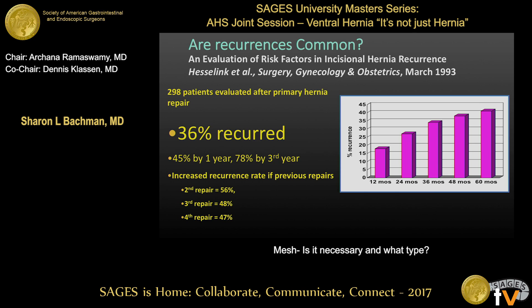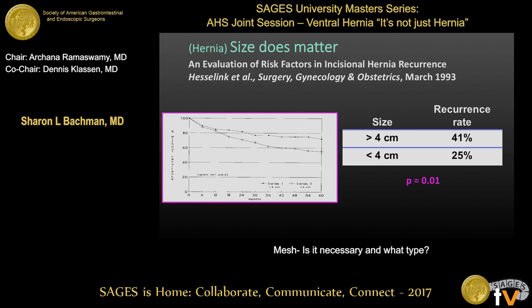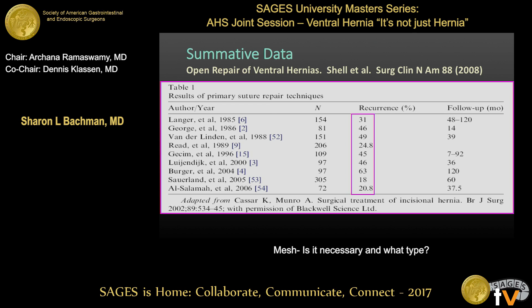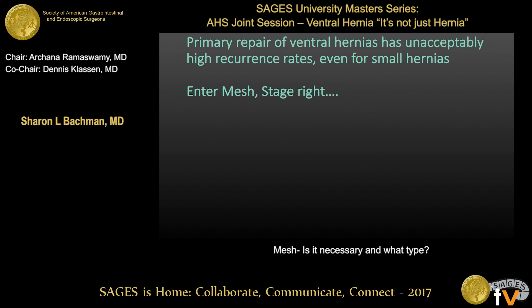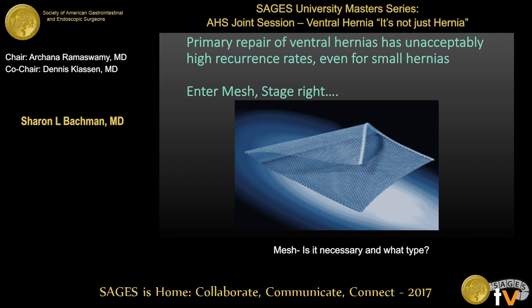If patients had previously had a repair and recurred, that recurrence rate was even higher. The sub-analysis found that the size of the hernia does matter. While we still have a high rate of recurrence for small hernias less than 4 centimeters, larger hernias reoccur at an even higher rate. Looking at summative data from multiple papers on open ventral hernia repairs, the recurrence rate varies from 18 to almost 50% — essentially a coin flip. So primary ventral hernia repair had an unacceptably high rate of recurrence, even for small hernias.